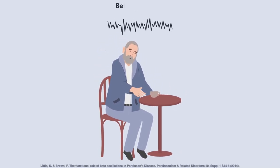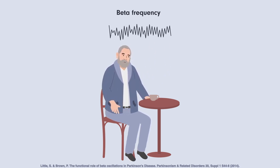These symptoms have also been linked to an excessive amount of brain activity in the beta frequency band across the motor cortex and subthalamic nucleus.